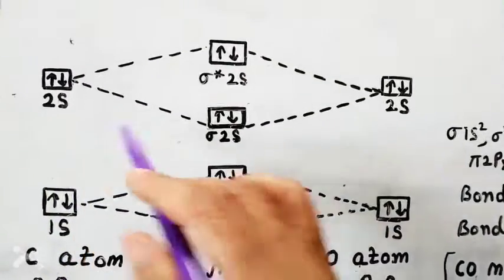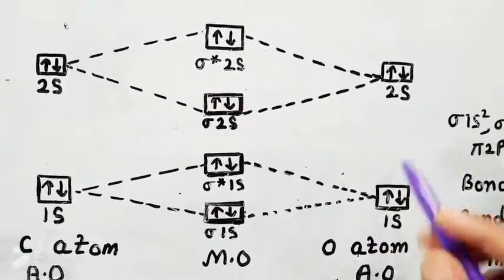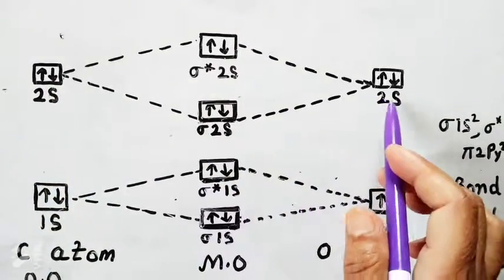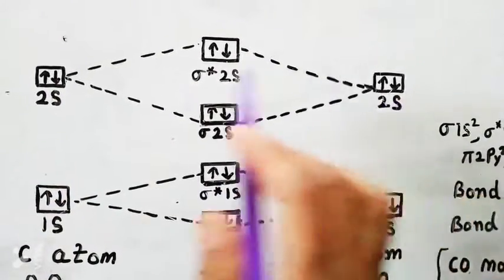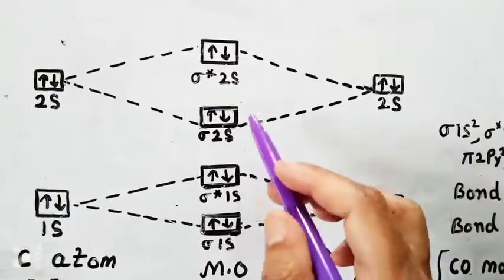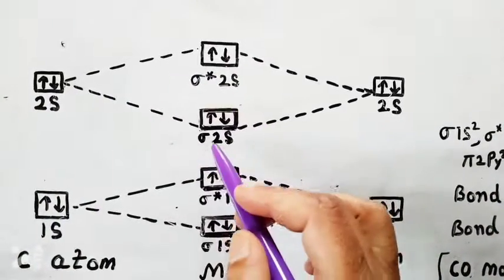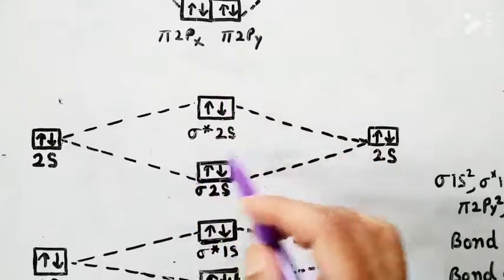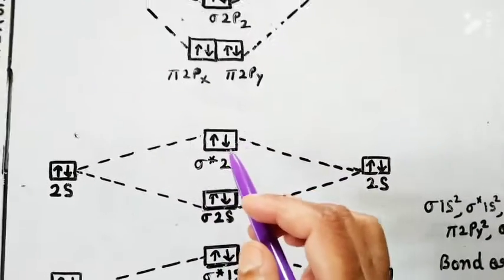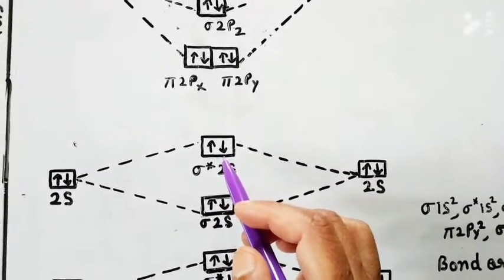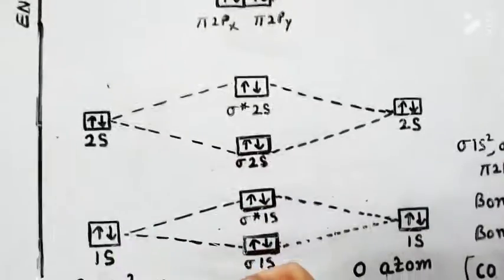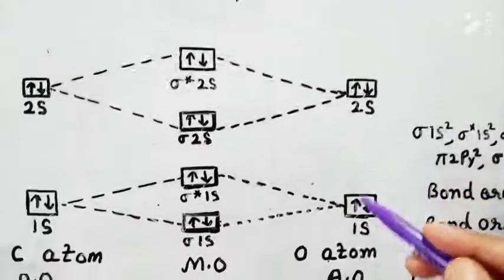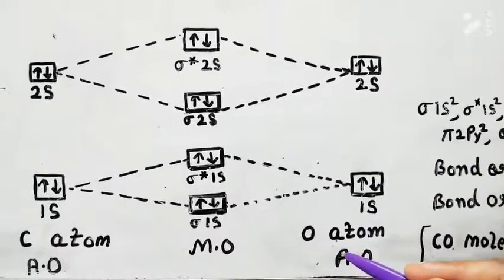Now the 2s orbital of the carbon atom and the 2s orbital of the oxygen atom will combine with each other. The total number of electrons in these atomic orbitals is four, so two will go into the sigma 2s bonding orbital and two will go into the sigma star 2s anti-bonding orbital.